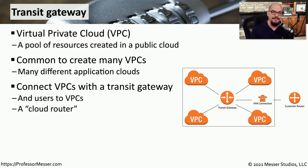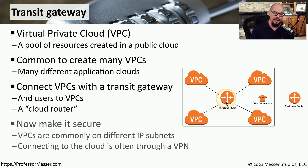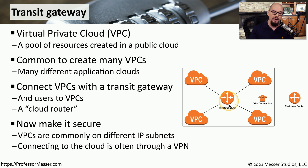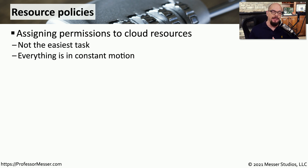You can think of this transit gateway as a router that's in the cloud. This provides us with the connectivity we need to connect all of our users. Normally, we would have the users connect into this transit gateway using some type of virtual private network connection. This means users at home or in our offices can connect through this VPN into the transit gateway, where they would then have access to all of the application instances running on the multiple virtual private clouds.